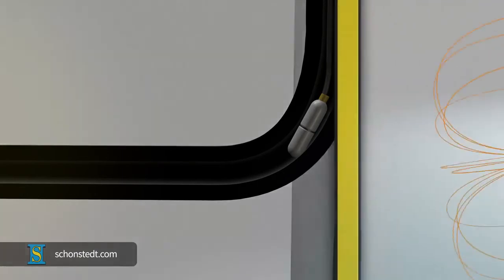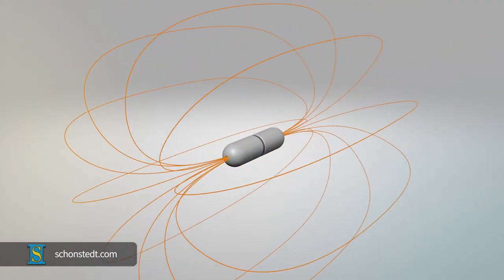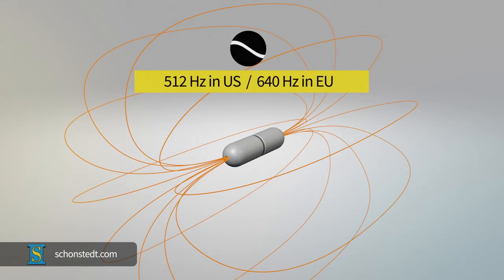Although sondes may come in various frequencies, there are two fairly standard operating frequencies that are commonly used and work for most applications. Those frequencies are 512 Hz in the US and 640 Hz in the EU.